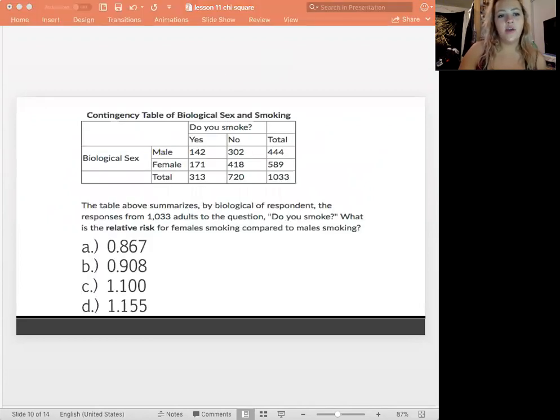All right, so let's do some review questions. So this first one says, the table above summarizes by biological, of respondent, the responses from 1,033 adults to the question, do you smoke? What is the relative risk for female smoking compared to male smoking? So go ahead and try to solve this one out. Let me know which answer you think from A through D it is, and then we will review it together after a minute.